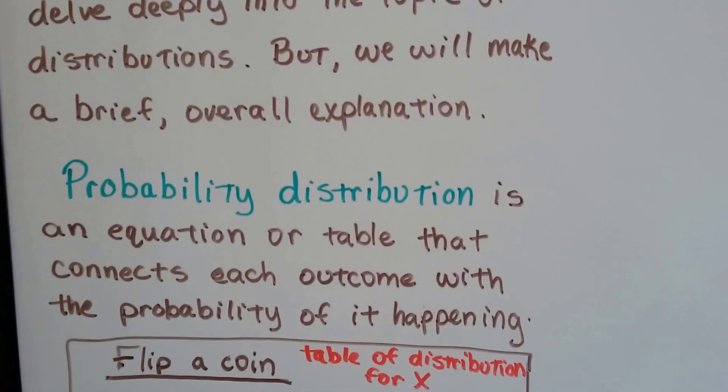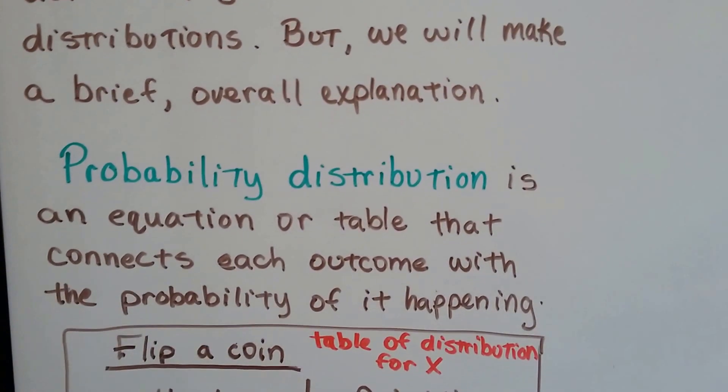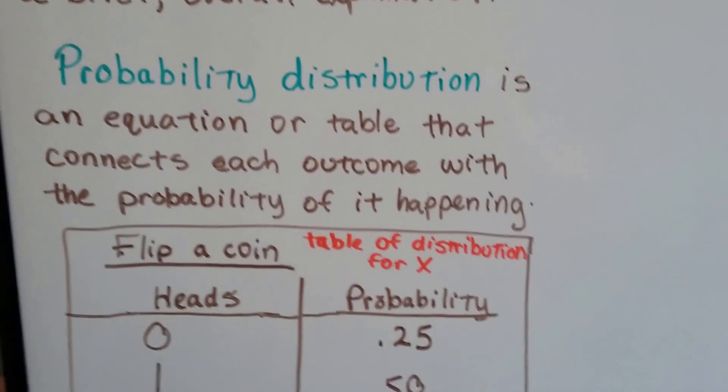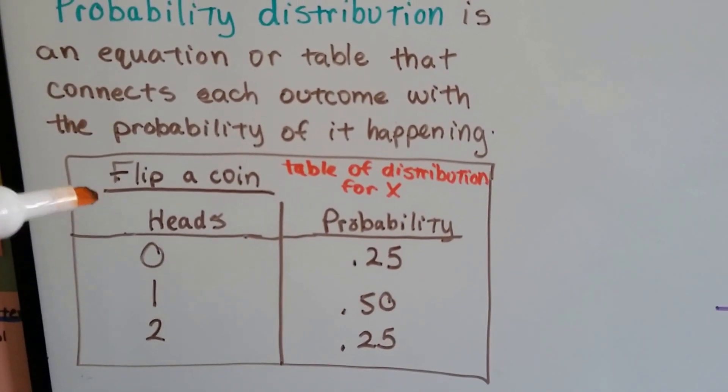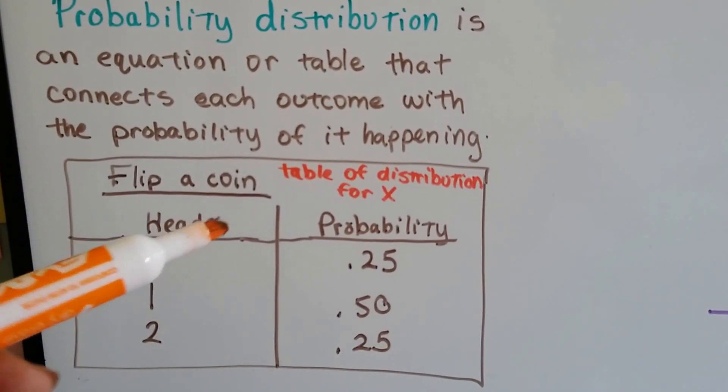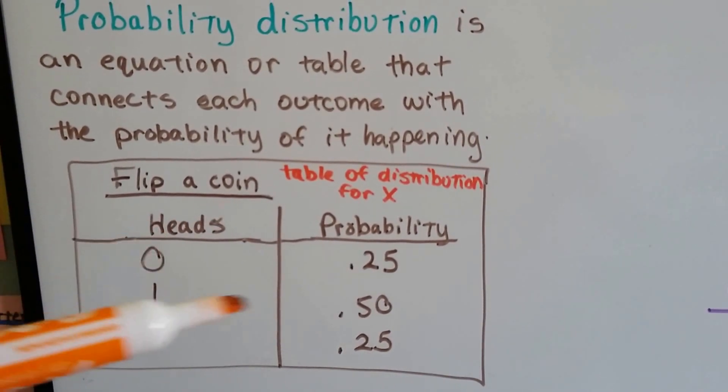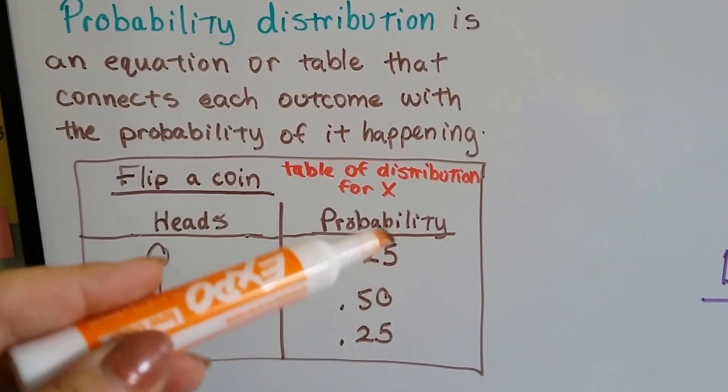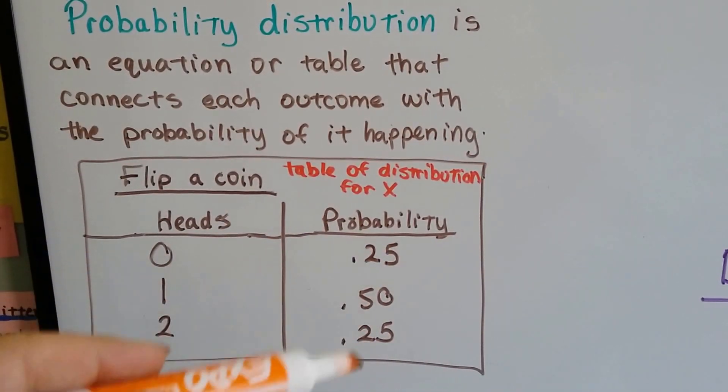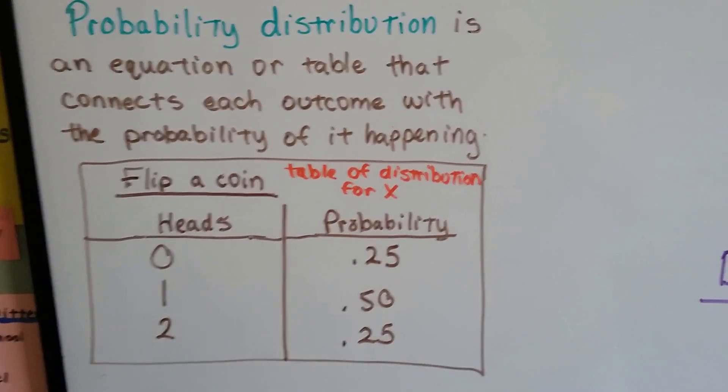A probability distribution is an equation or a table that connects each outcome with the probability of it happening. So here's a table of—we flipped a coin a couple times—it's the table of distribution for a variable x, and this is the probability distribution right here. It's the probability of what'll happen.